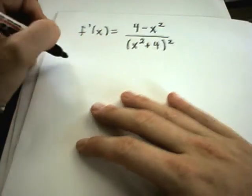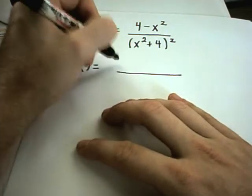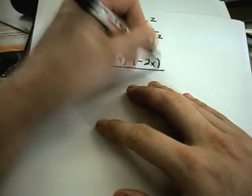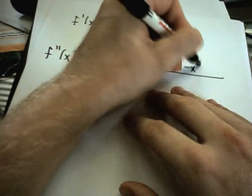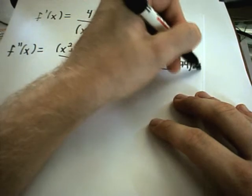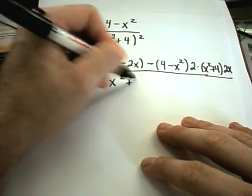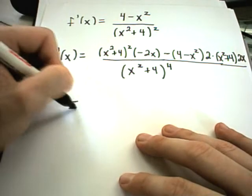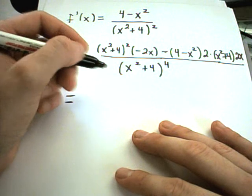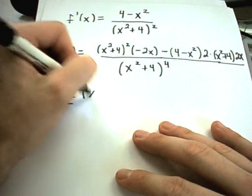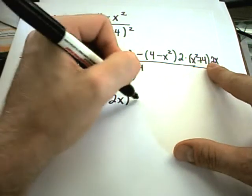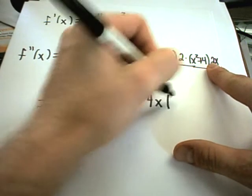Using the quotient rule along with the chain rule again, the second derivative: you get the bottom — x squared plus 4 squared — times the derivative of the top, which is negative 2x, minus the top times the derivative of the bottom. That's 2 times x squared plus 4, multiplied by 2x. All of that is over the denominator squared, which makes it to the fourth power. I'm going to clean up the numerator a little bit. Looking at the second part, I've got 2 times 2x, so minus 4x, then 4 minus x squared, times x squared plus 4.